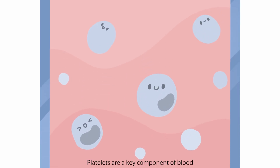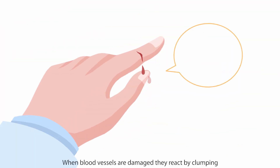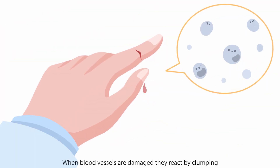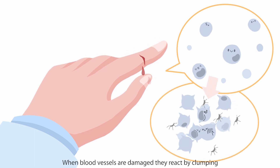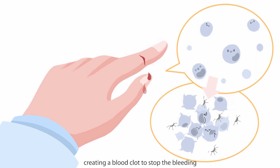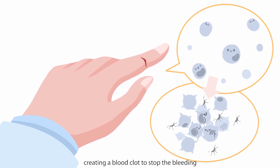Platelets are a key component of blood. When blood vessels are damaged, they react by clumping, creating a blood clot to stop the bleeding.